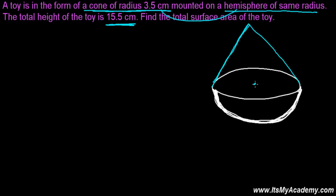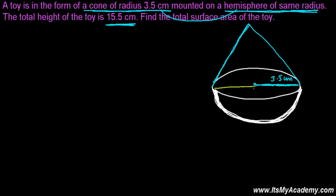The cone has a radius of 3.5 centimeters, and the hemisphere has the same radius — meaning this is the common radius for both. So if this side is 3.5 centimeters, then this side is also 3.5 centimeters, and this will also be 3.5 centimeters.